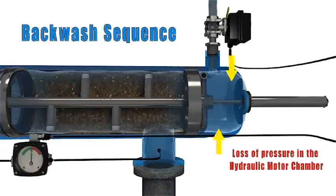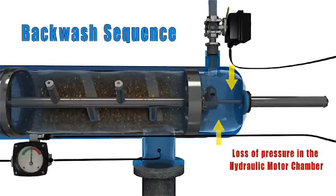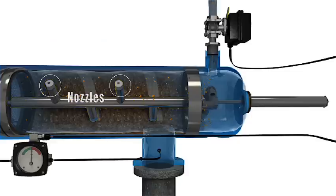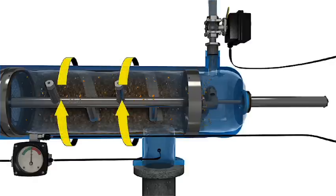Opening the flush valve creates a loss of pressure in the hydraulic motor chamber, which causes the particle remover to begin vacuuming the inside of the screen through several suction nozzles. The flow of water through the hydraulic motor drives the particle remover's rotation, allowing each suction nozzle to scan a radial strip of screen.